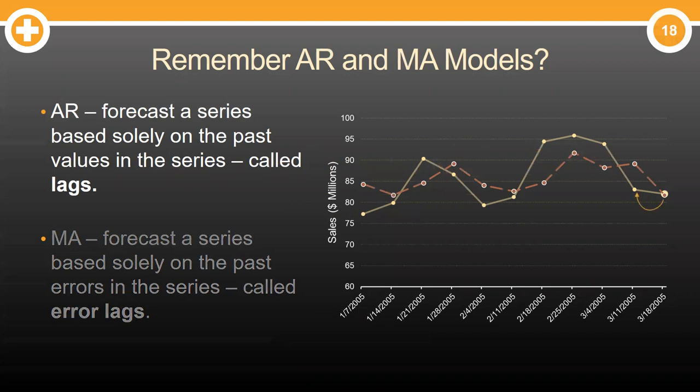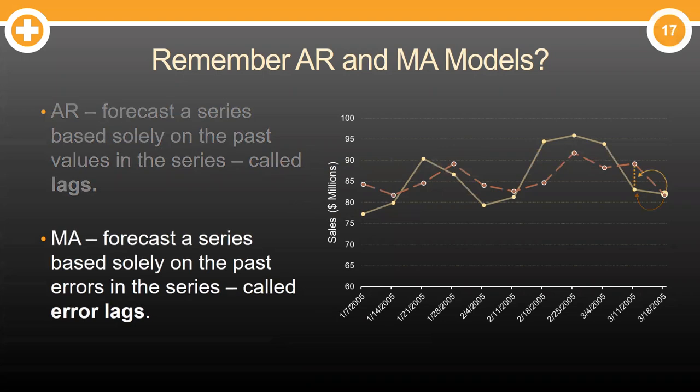Remember, AR models forecast a series based solely on the past values of the series, called lags. MA models, on the other hand, forecast a series on past values of the errors in the series, called error lags.